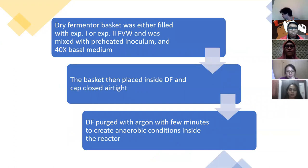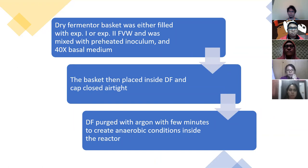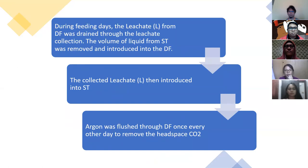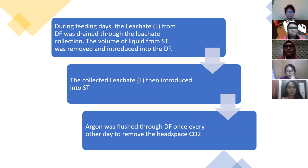The dry fermenter basket was either filled with autoclave or non-autoclave fruit and vegetable waste and mixed with pre-heated inoculum and 40-times basal medium, then placed inside the fermenter. The dry fermenter was then purged with argon. During the feeding day, the leachate from the dry fermenter was drained through the leachate collection system and then introduced into the storage tank, and argon was flushed through the dry fermenter.